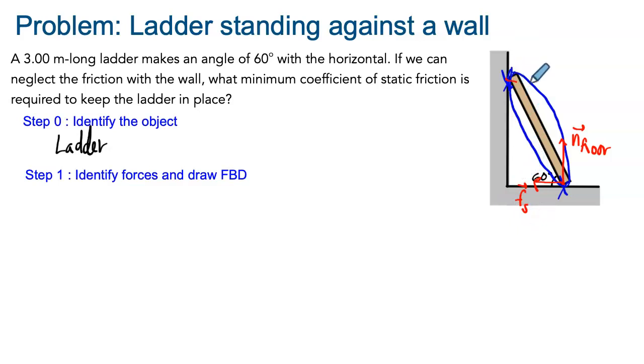At the top, we have also a normal force. I'll call this one NW for normal with the wall. We could also have friction, but in the question it says neglect the friction with the wall. If we did not do this, we would be in trouble because there would be too many unknowns. Then we're missing one force, the force due to gravity. We know it will be pointing straight down. Since it's applied at the center of gravity of the ladder, we assume it will be right in the middle. These are all the forces.